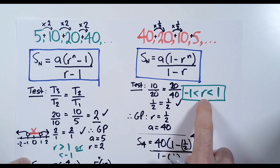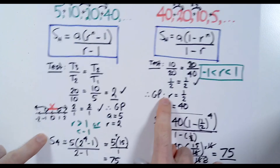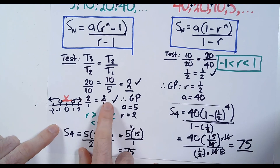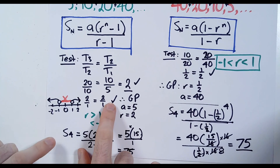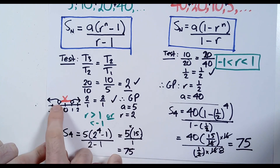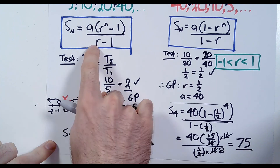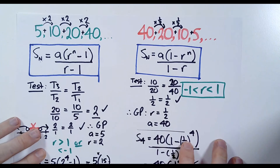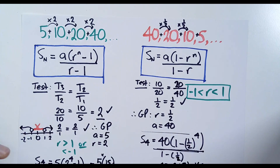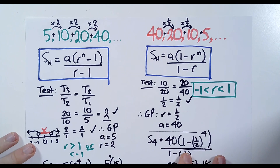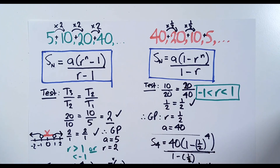If you added further terms, say the first 10, the answers would be very different between the two examples because one sequence grows and the other shrinks. Those are the two types of formulas you might have to use to find the sum of a GP. Hope you found this video helpful — please like and subscribe, and I'll see you in the next one.